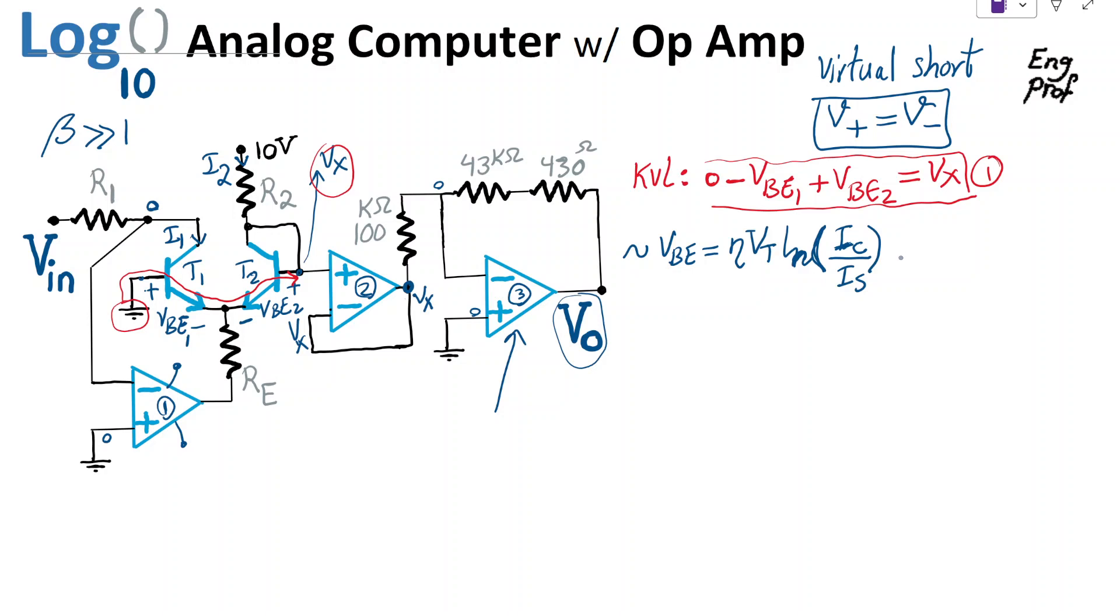For silicon transistors, eta or ideality factor is generally a number between 1 and 2, but for the silicon junction transistor, this is closer to 2. We don't care about the exact value of eta or Vt for this conversation. Vt is just Kt over Q, and that's the thermal voltage.